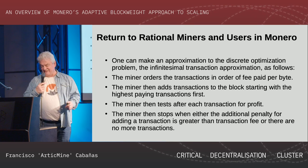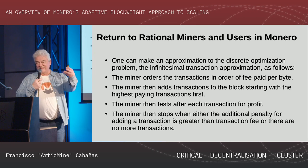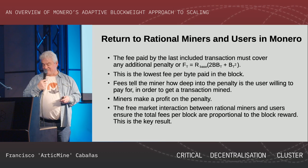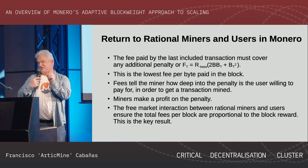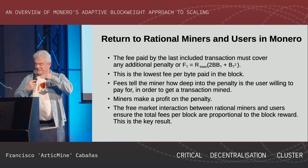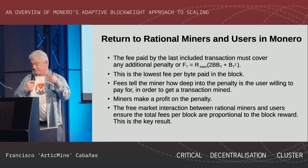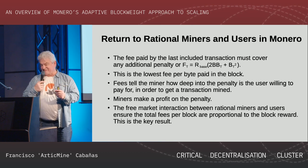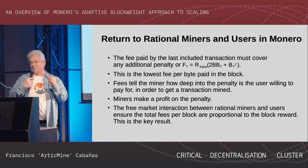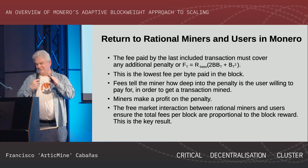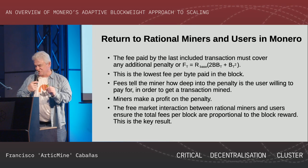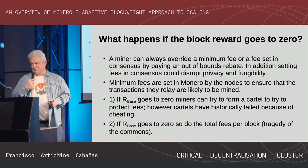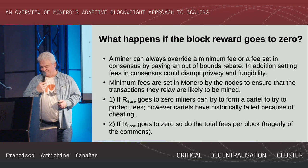Returning to the rational miner: miners and users in Monero add transactions in order of profitability. The lowest-fee transaction in the block is the one at the highest penalty level, so the miner makes a profit on the penalty. Fees tell the miner how far you wish to push the penalty. One critical point to understand: the total fees per block are proportional to the block reward. The amount of fees a miner gets per block is proportional to the block reward — this is very important.